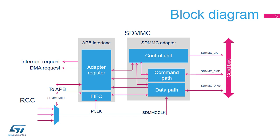The SDMMC adapter provides functions such as clock generation, command and data transfer, while the APB interface manages the control and status registers, FIFO buffers, as well as DMA and interrupt requests. Two clocks are available for the SDMMC controller: the APB clock (PCLK) for the APB interface, and the SDMMC clock (SDMMC-CLK) for the SDMMC adapter.